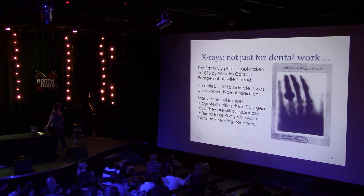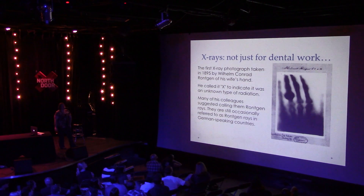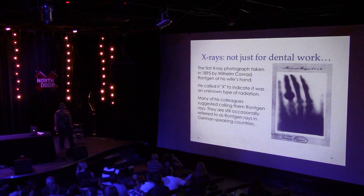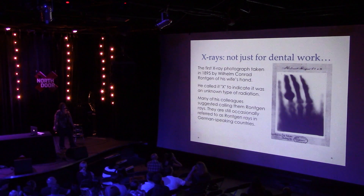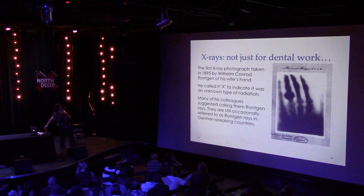I'm sure you've all had an x-ray done at some point. The first one was actually done in 1895 by a fellow named Röntgen, who took a picture of his wife's hand. He didn't know what type of radiation it was at the time, so we call it X — because that's what happens when we don't know what something is, we call it X. He called it X-rays, and they're still called that, although in German-speaking countries they're sometimes still called Röntgen rays.